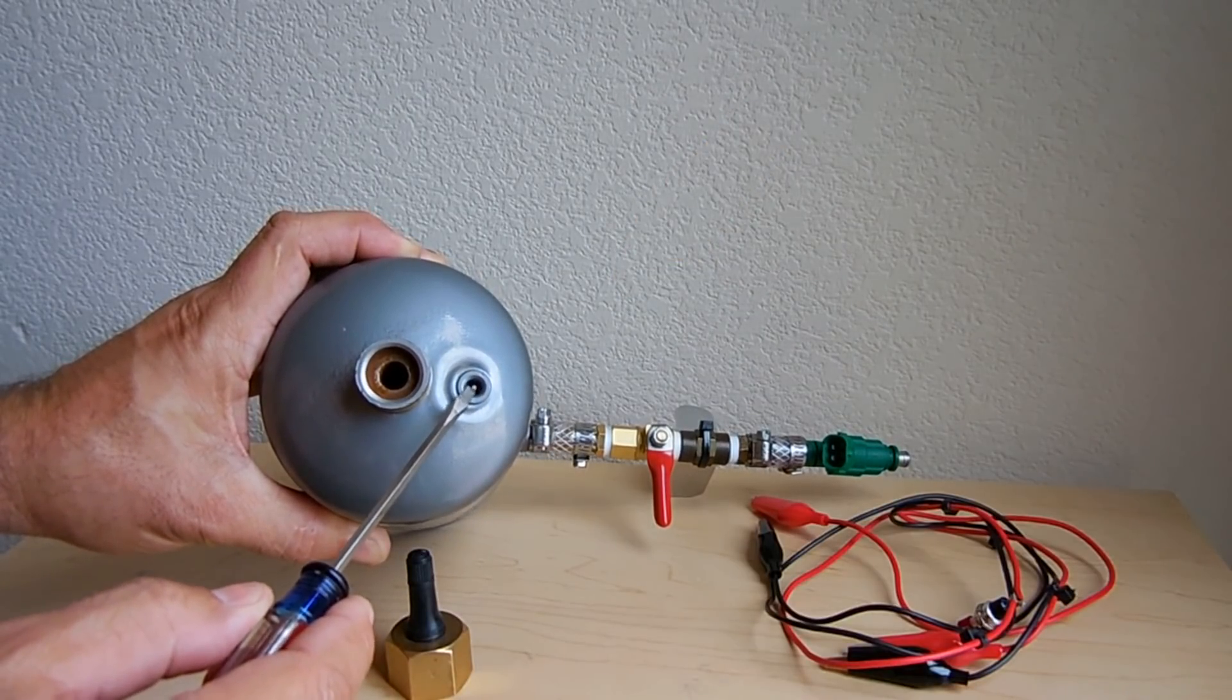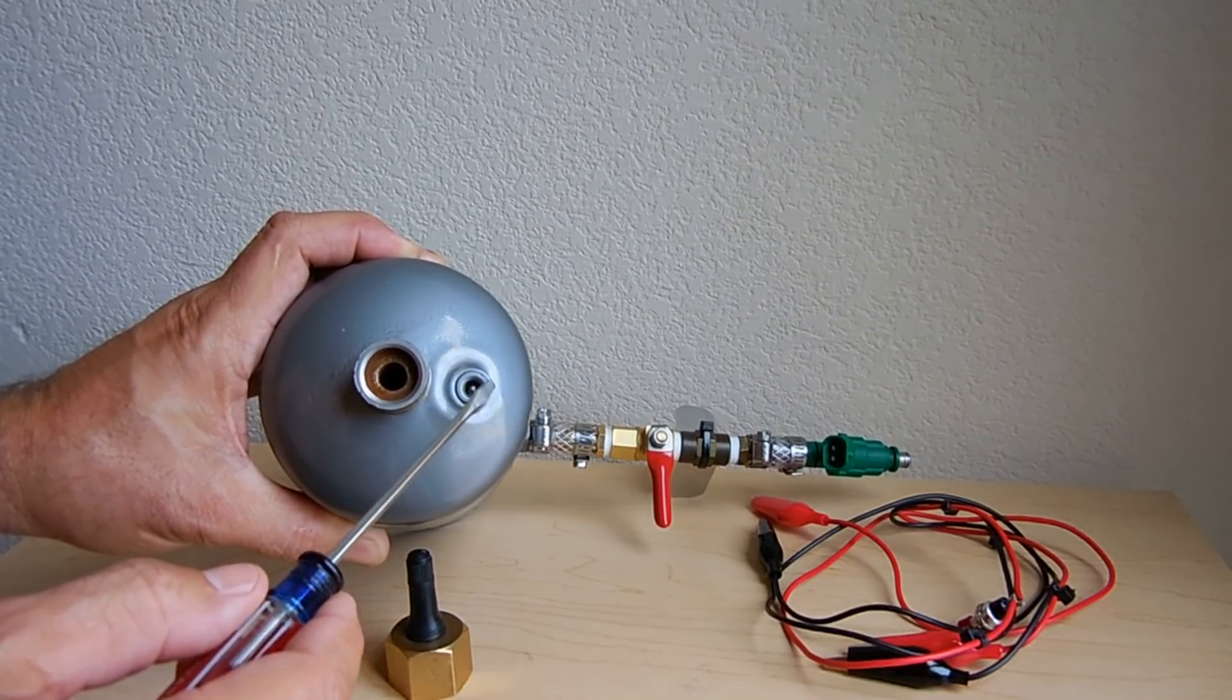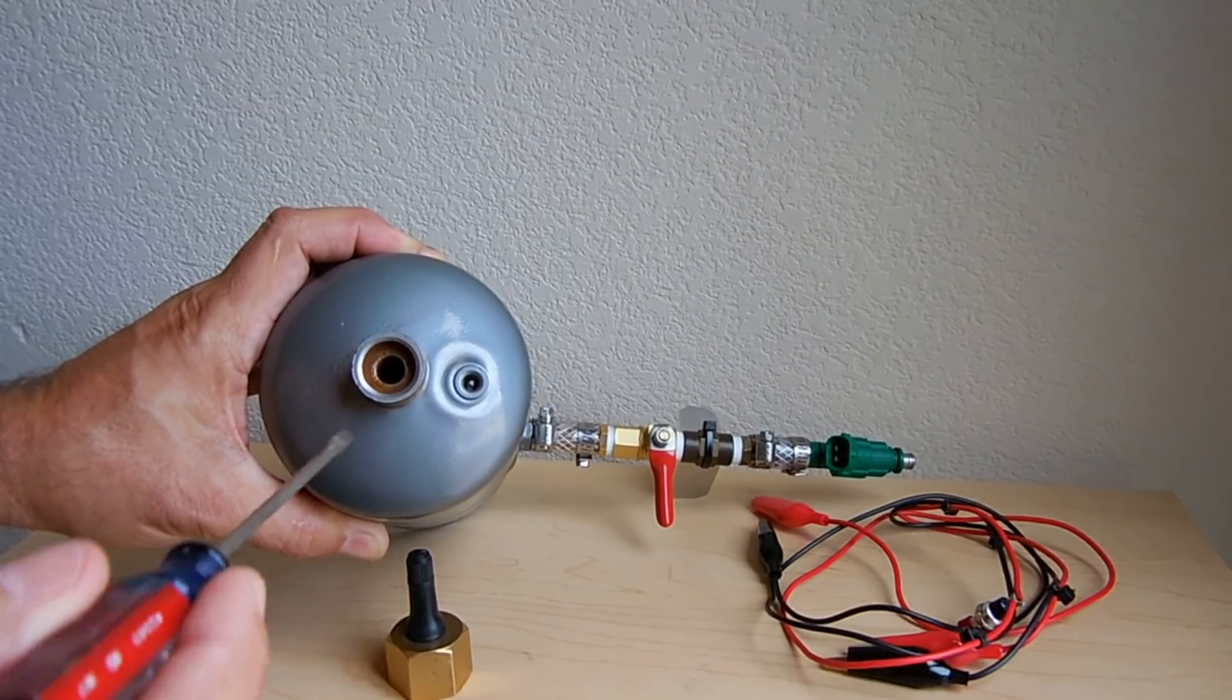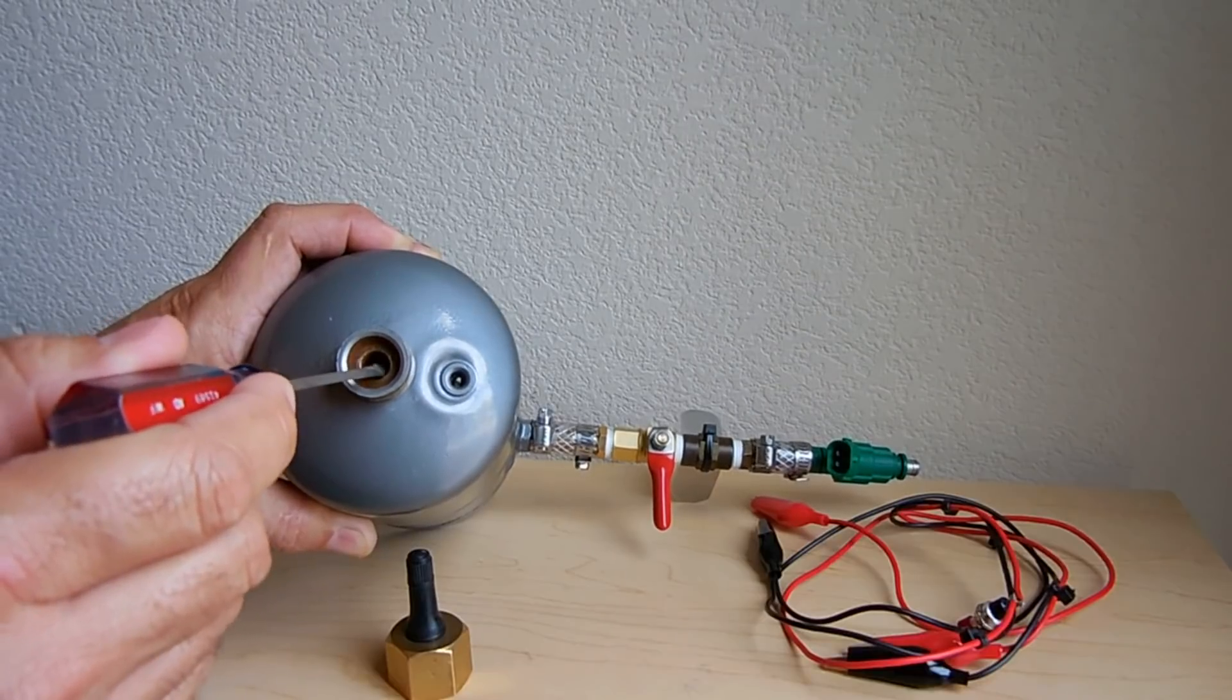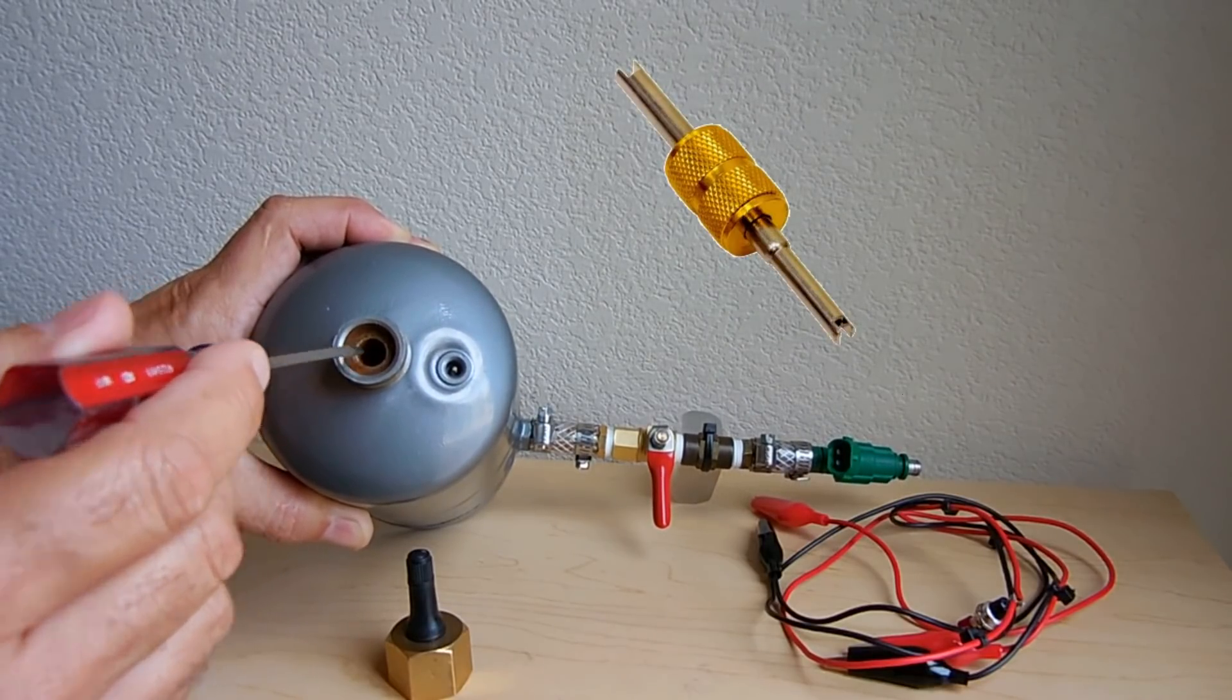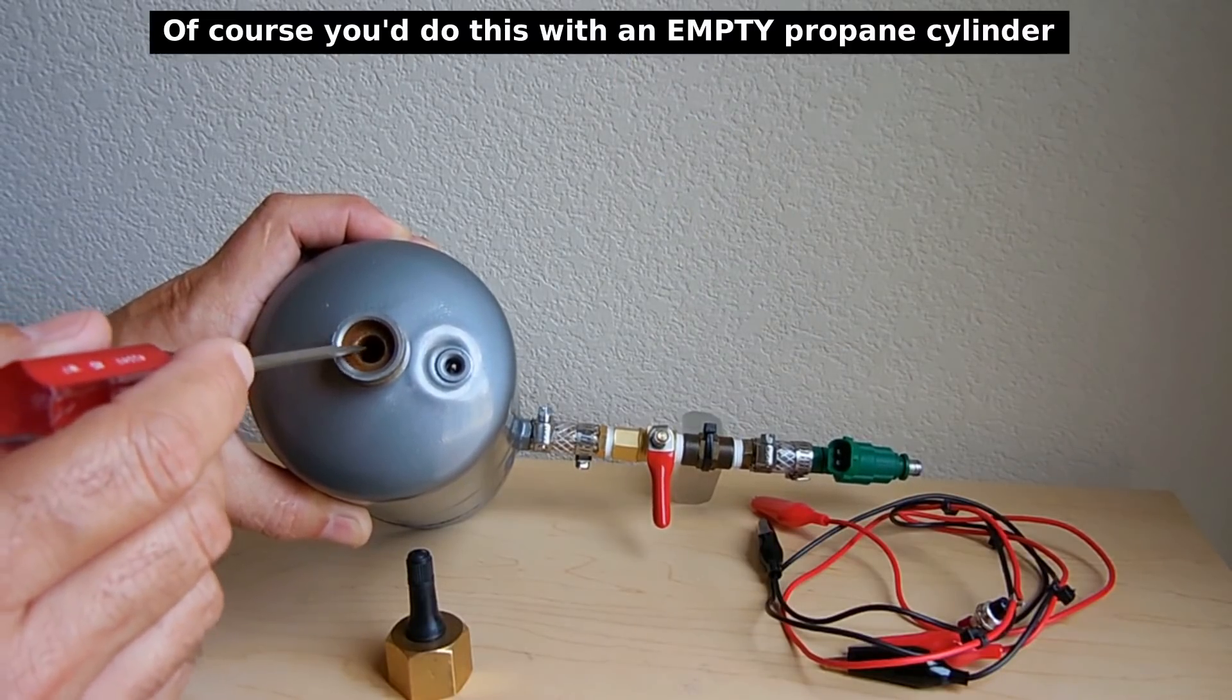This valve right here is designed to release pressure from inside the cylinder if it gets too high. This little pin on the Schrader valve pushes outward and it allows pressure to escape. This one here you push in to let the pressure out. Now this was threaded with the Schrader valve, so using a valve core removal tool I unscrewed it.